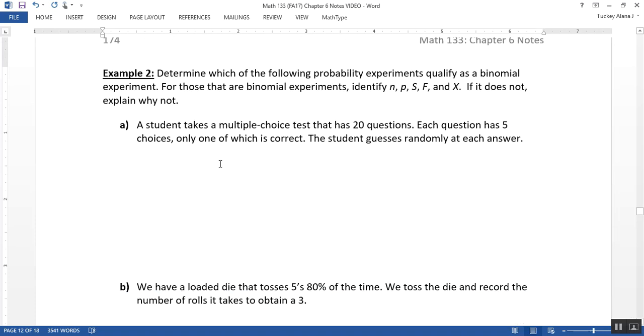So it says determine which of the following probability experiments qualifies as a binomial experiment. For those that are binomial experiments, identify N, P, S, F, and X. If it does not, explain why not.